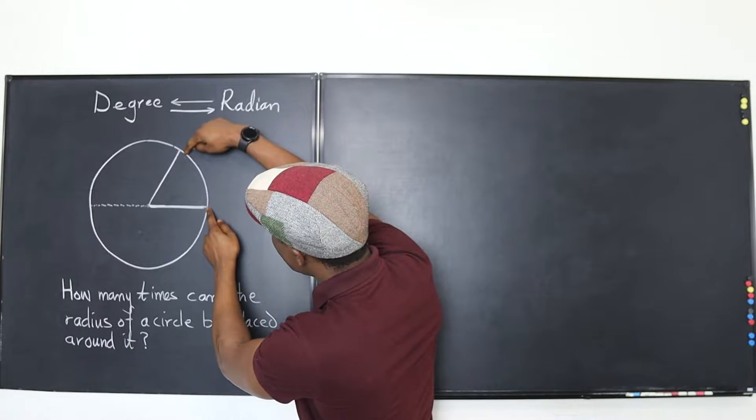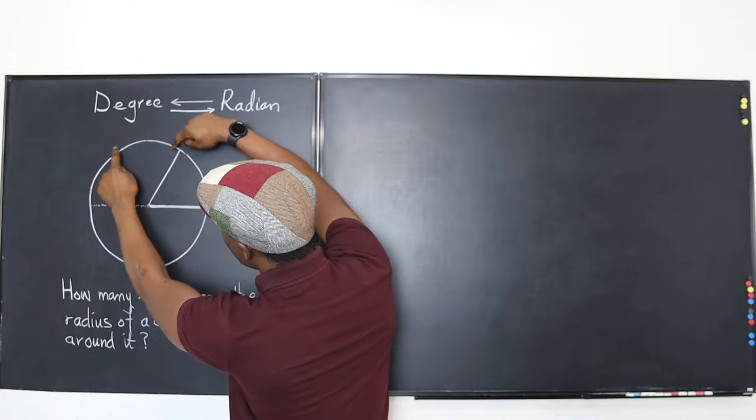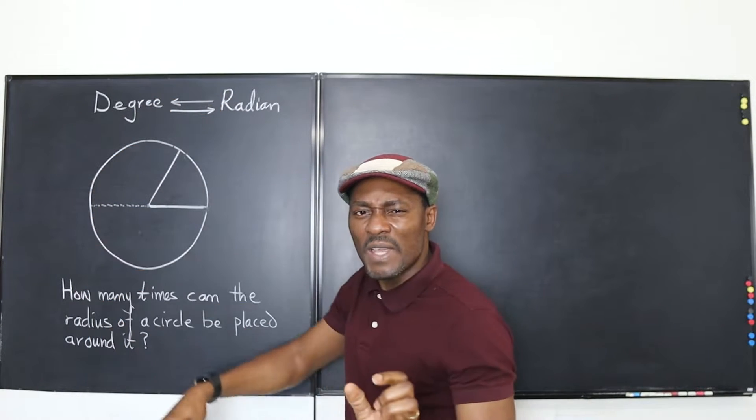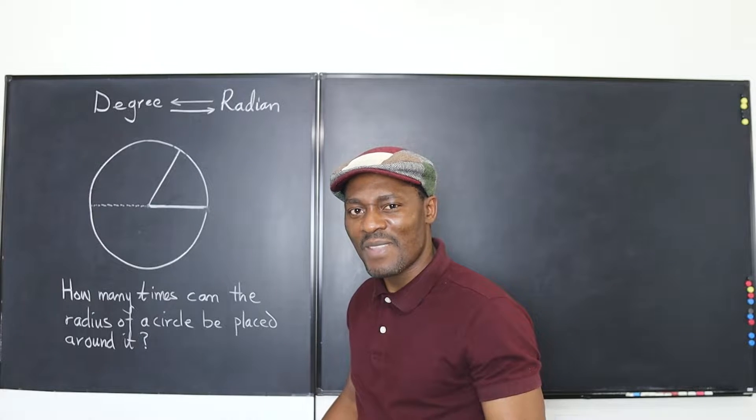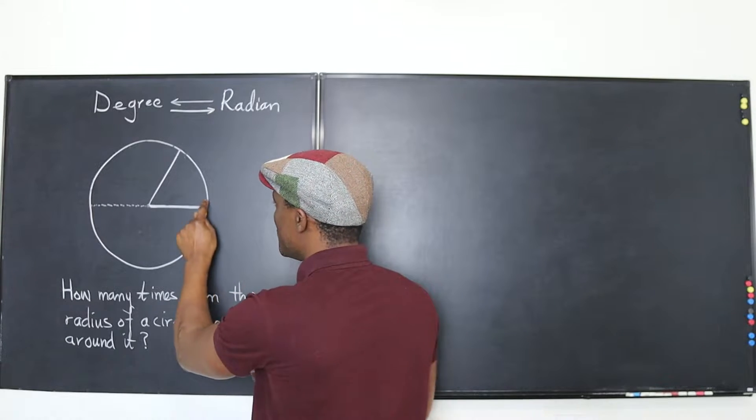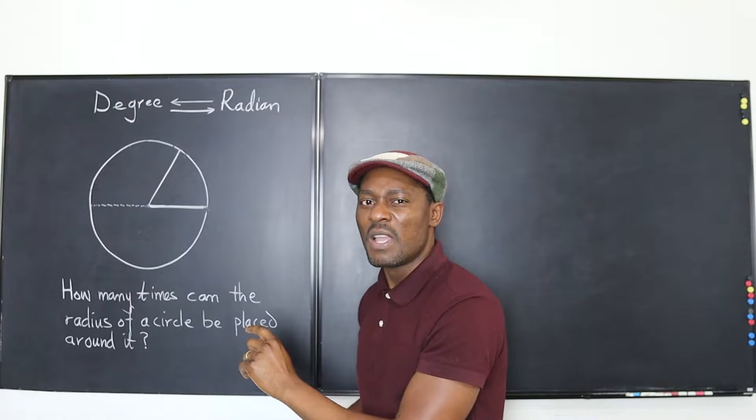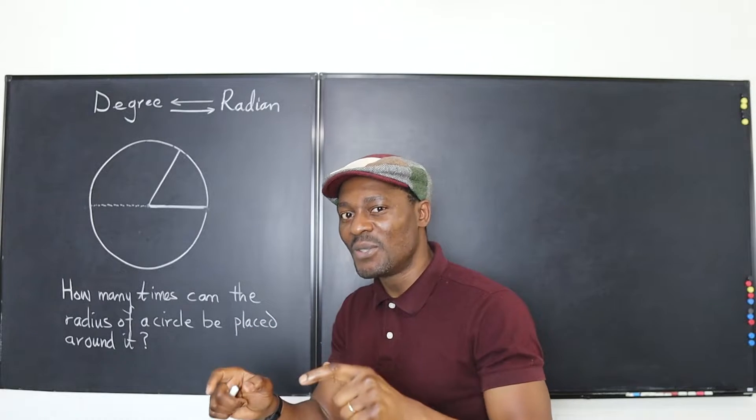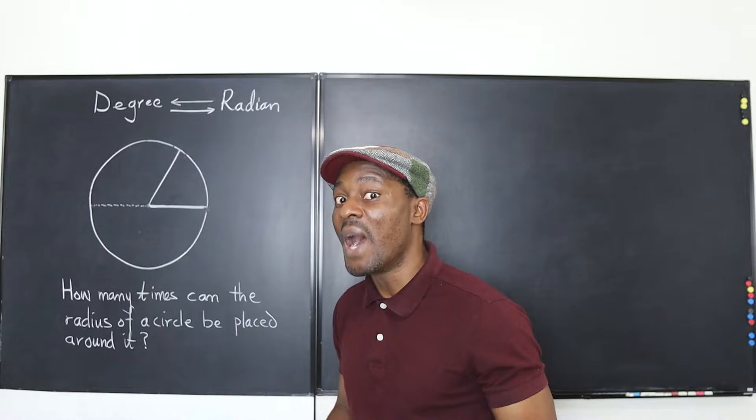You put one radius here, another one, another one. It looks like it's gonna be just slightly more than three of them. So how many radii will you get just going from here to here in a semicircle? Well it's slightly more than three.